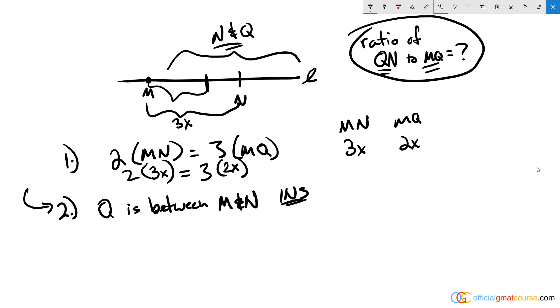It's going to be 2x. So the difference between q and n is going to have to be 1x, and we know this because we know that they're to the right of m on the number line. There's no other way to set this up.